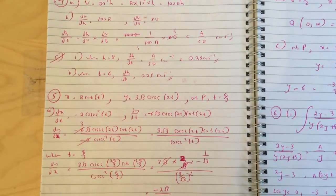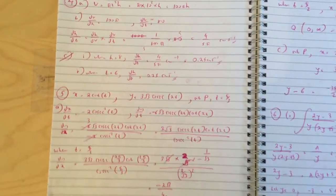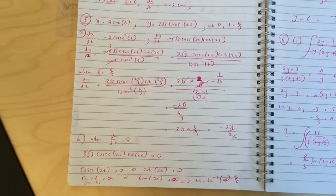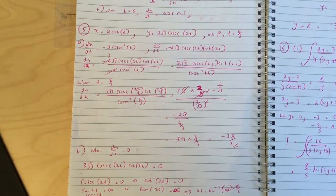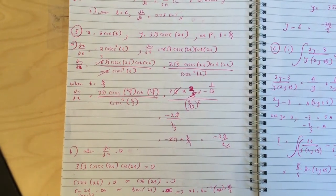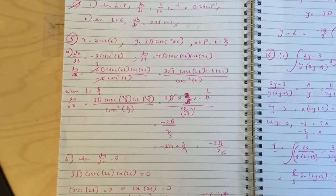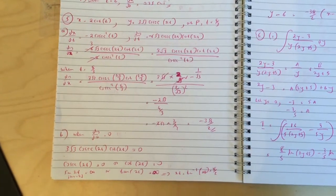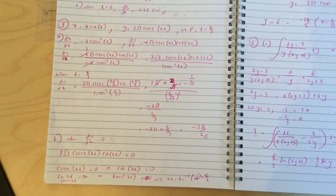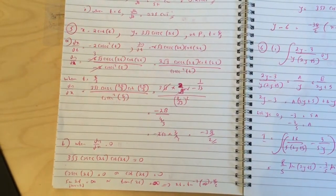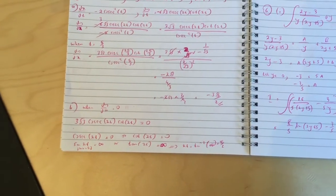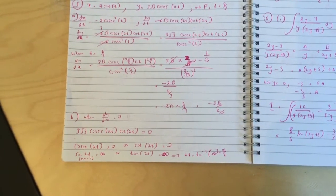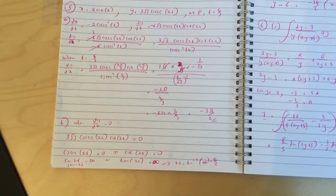Question 5, you have dy/dx equals to 3 root 3 cosec 2t cot 2t over cosec squared t. The gradient at t equals to pi over 3 works out to be minus 2 minus 3 root 3 over 2. For part B, when dy/dx is equal to 0, you get tan 2t equals to infinity, so 2t equals to pi over 2, so t equals to pi over 4.